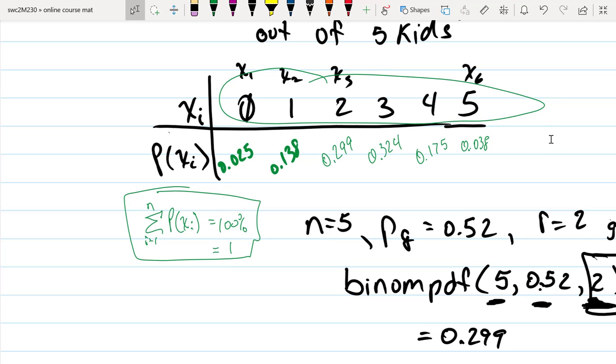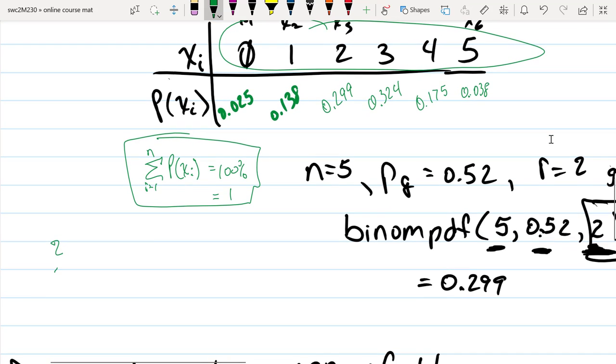What's the average number if I looked at families, maybe a thousand families where each one of those families had five kids, and then if I counted the number of girls in each one of those families? What would be the average number of girls?